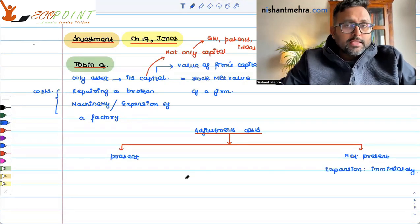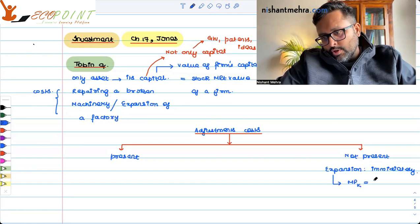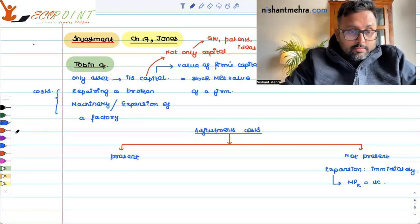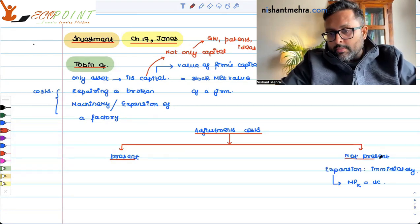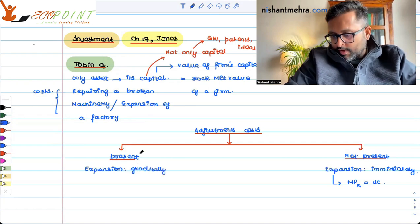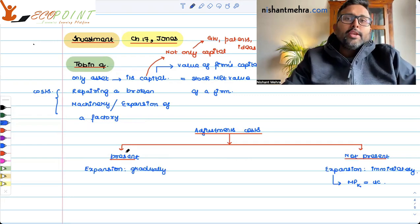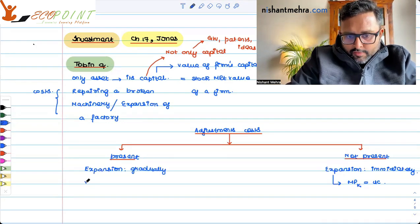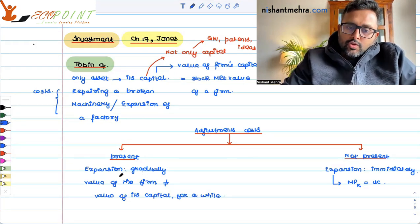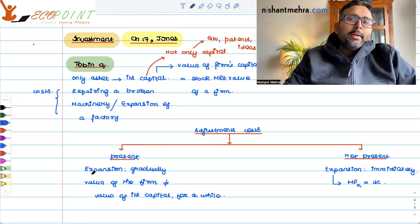Expansion is going to occur until the marginal product of capital is equal to the user cost. And if there are adjustment costs, then expansion is not going to occur immediately — it will occur gradually. And the value of the firm may differ from the value of its capital for a while. If the expansion is going to occur gradually, then the value of the firm may not be equal to the value of capital at every instant.